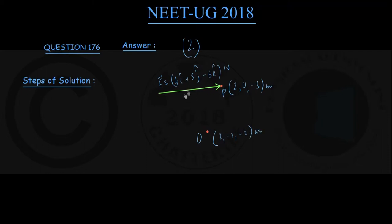To recap: a force of 4i plus 5j minus 6k Newton is acting at point P with coordinates (2, 0, −3) meters. We need to find the moment of the force about point O with coordinates (2, −2, −2) meters. Those are the given values and four options are provided.